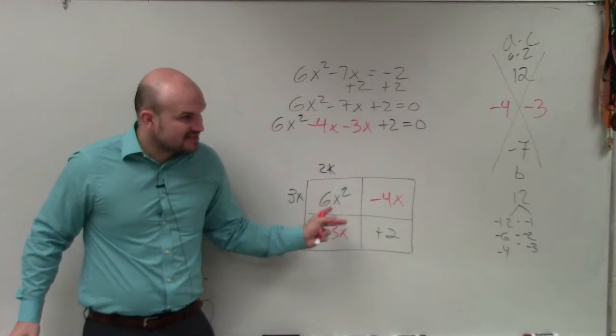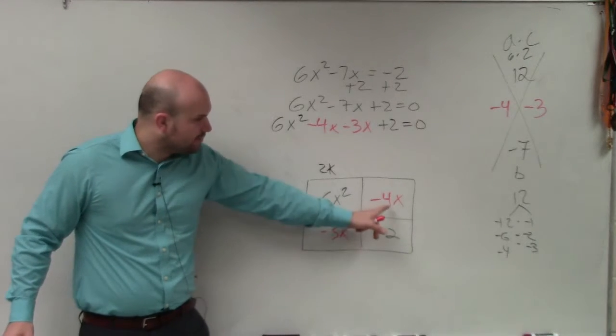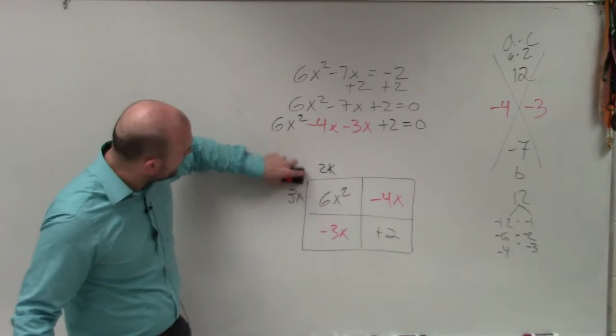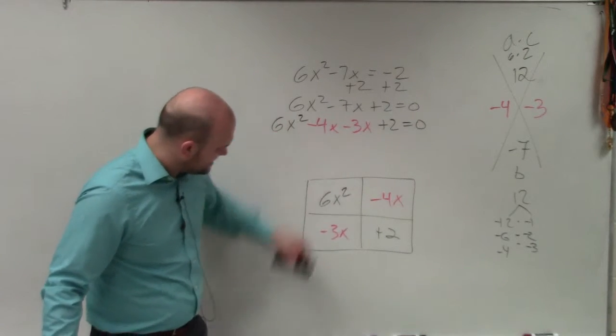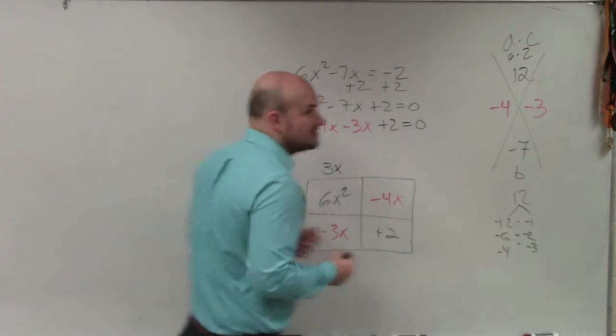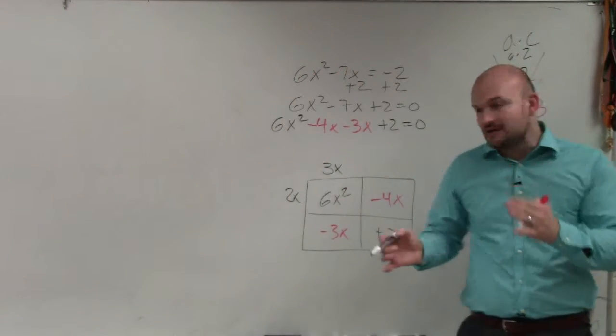So 6x and x maybe might not work. So maybe let's do 3x and 2x. Well, yeah, 3x times 2x gives you 6x squared. But 3x times what gives you negative 4x? Again, we run into a problem. However, what I notice, because I've done so many examples of these, I can switch this around into 2x and 3x. You can just switch them around.